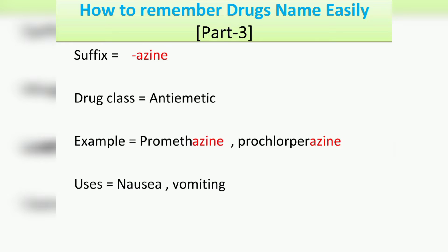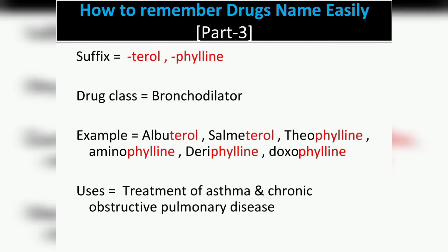The second suffix is '-terol' and '-phylline', which belong to the drug class bronchodilators. Drugs like albuterol, salmeterol, theophylline, aminophylline, doxophylline, and deriphylline belong to bronchodilators. The use of bronchodilators is the treatment of asthma and chronic obstructive pulmonary disease (COPD).